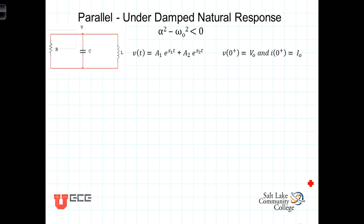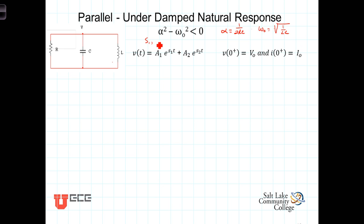Let's turn our attention now to the underdamped case. The underdamped case was the case where alpha squared minus omega naught squared was less than zero, where alpha, for the parallel circuit, was defined as 1 over 2RC, and omega naught was defined as 1 over the square root of LC. In the underdamped case, the value under the radical, alpha squared minus omega naught squared, is negative.